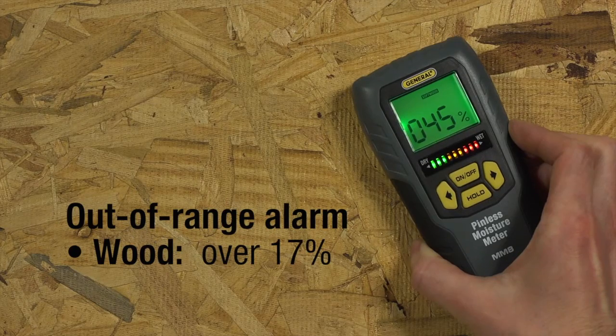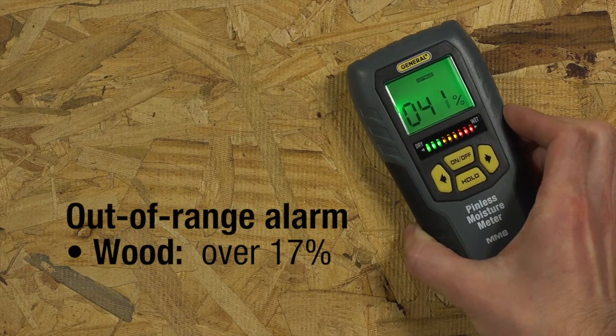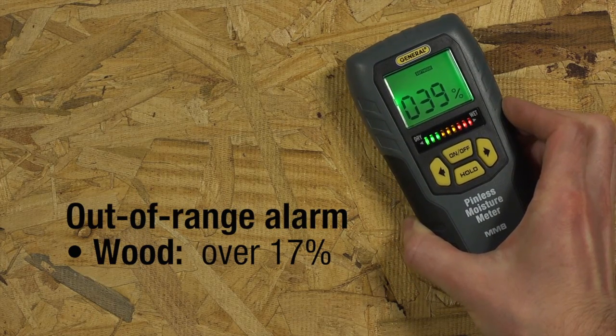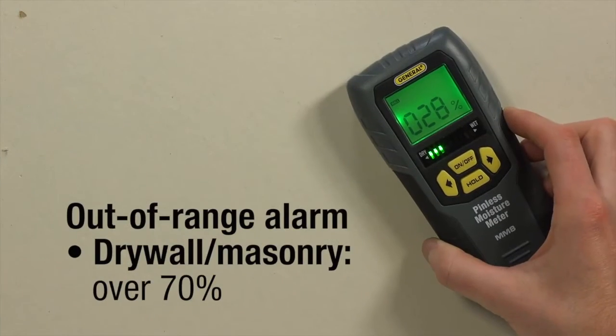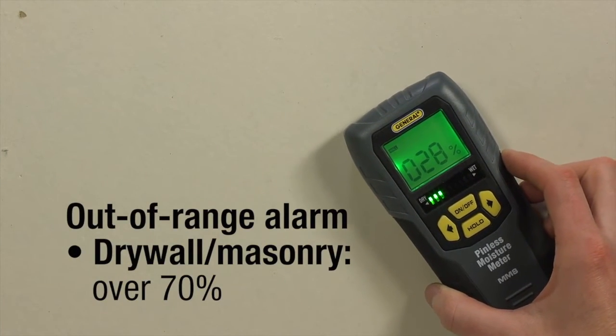MM8 has an audible out-of-range alarm for wood with a wood moisture equivalent, WME, over 17%, and for drywall and masonry that's more than 70% wet.